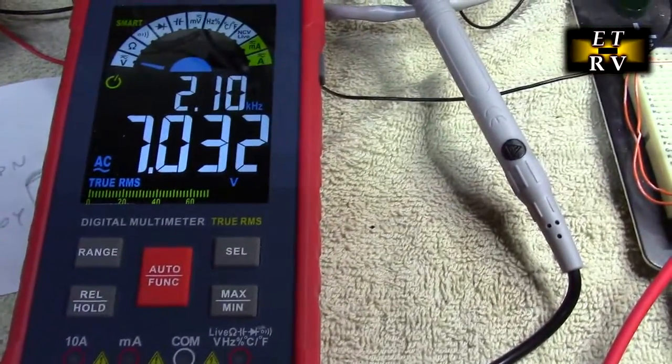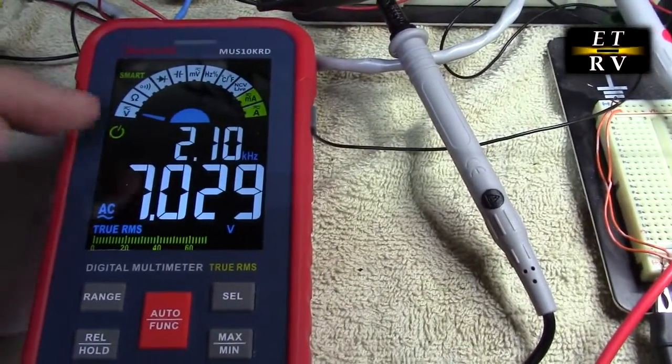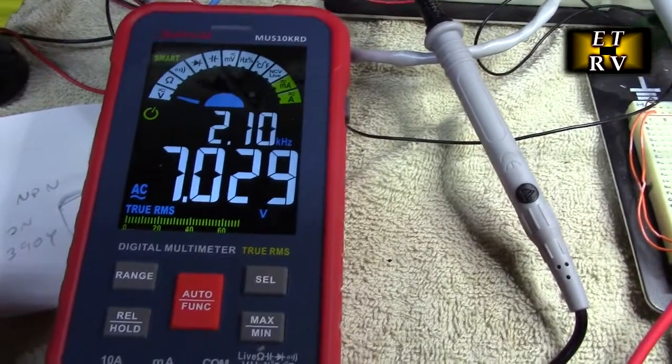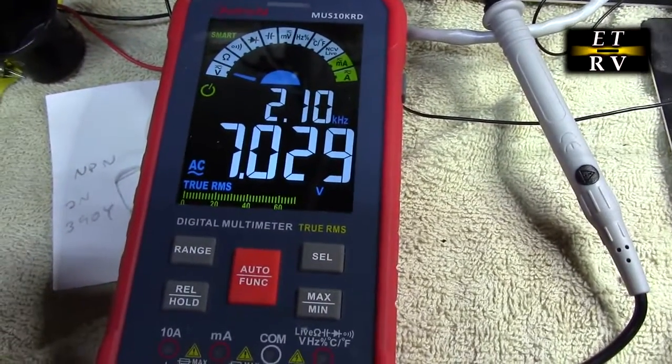So on this mode, it's telling me the actual RMS voltage of this that's coming out of here. Of course, if I increase it there, then you see a big increase on the meter right there. So it's telling me the frequency and the AC RMS. Really, really invaluable information.